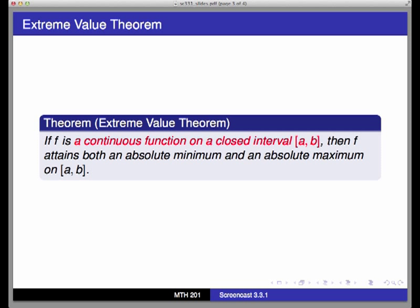This theorem, or mathematical fact, says that if f is a continuous function on a closed interval from a to b, then f attains both an absolute minimum and an absolute maximum value on the interval from a to b. So in other words, if we require f to be continuous, that is no breaks or jumps or asymptotes in its graph, and stay confined on a closed interval that includes its endpoints, it must reach an absolute high point and an absolute low point somewhere, possibly right at the endpoints themselves.